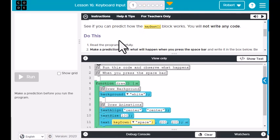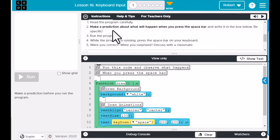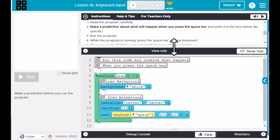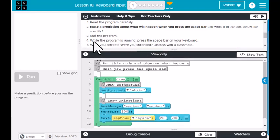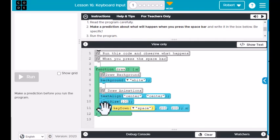So for this, it says read the program carefully and make a prediction about what will happen when you press the spacebar. If we look down here for the code, it says run the code while the program is running, press the spacebar on your keyboard. When we press the spacebar, something is going to happen at the 200, 200 mark here, so something is going to show up.